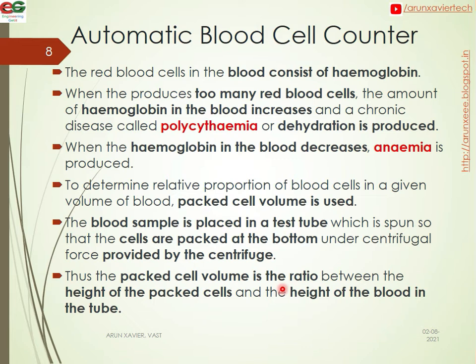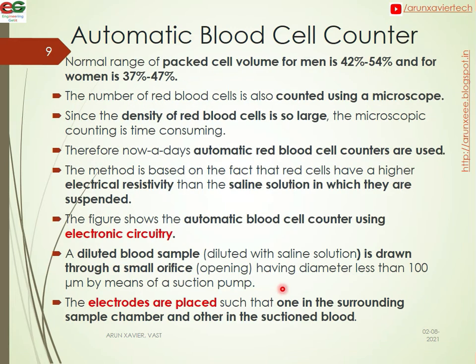The packed cell volume is the ratio between the height of the packed cells and the height of the blood in the tube. The normal range of packed cell volume is 42–54% in men and 37–47% in women.